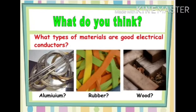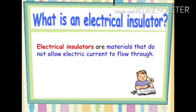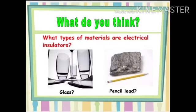What type of materials are electrical conductors? Conductors are materials which allow electricity to pass through them — like aluminum. What type of materials are electrical insulators? Electrical insulators are substances or materials which do not allow electricity to pass through them — like glass and pencils.